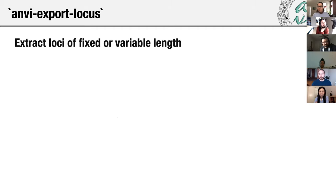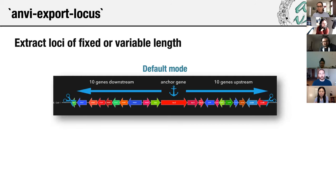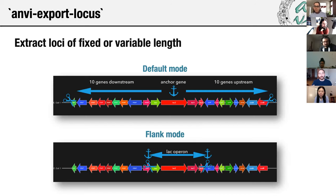Amvio Export Locus has a couple of different modes because not all loci come in the same shapes and sizes. The default mode provides an anchor search term with a fixed number of genes upstream and downstream, giving you a consistent fixed length of loci. If you have a locus with multiple kinds of gene content, you can use flank mode where you provide two search terms defining the flanks. So if there's a gene insertion or deletion event in your loci, Amvio Export Locus will handle that and give you all the versions of the loci you have. I have a tutorial for this on the Marin Lab website.